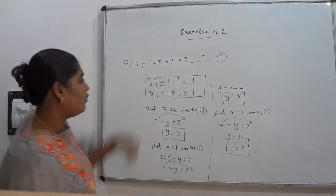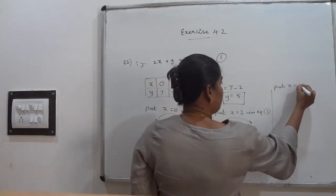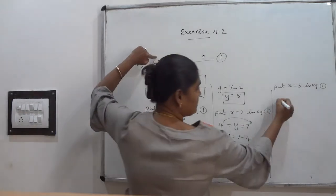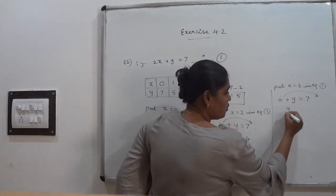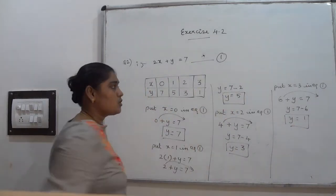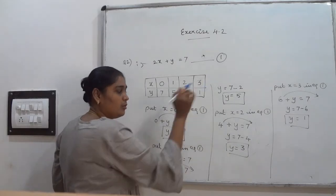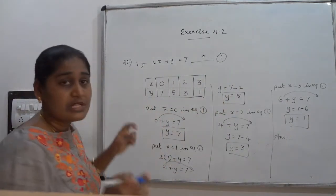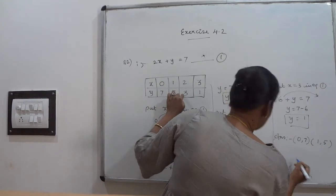Put x = 3 in equation number 1. Substituting: 2 × 3 = 6, so 6 + y = 7, giving y = 7 − 6 = 1. So the 4 solutions are the coordinate pairs: (0, 7), (1, 5), (2, 3), and (3, 1). Solution means coordinate values.